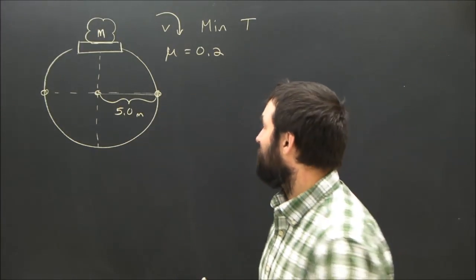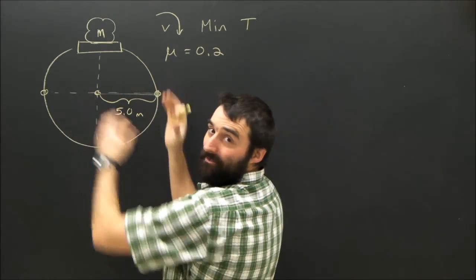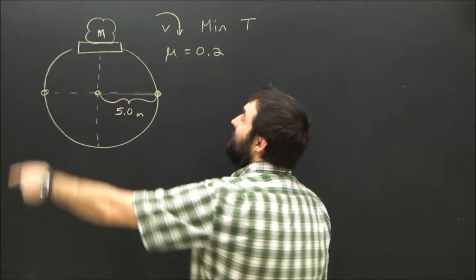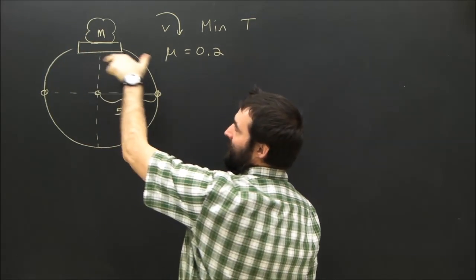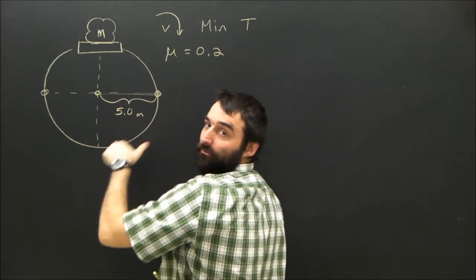Okay, so here's the question. We have a Ferris wheel which is five meters in radius, and it is spinning this way, and there's a rock sitting on the platform. The platform will stay horizontal as it rotates.